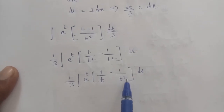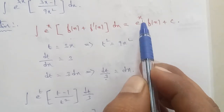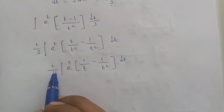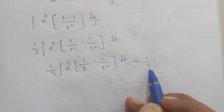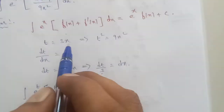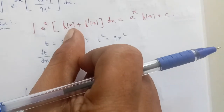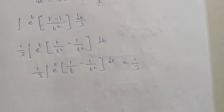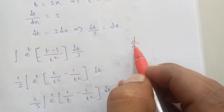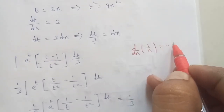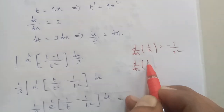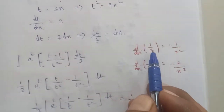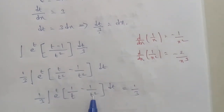Now comparing with the formula integral of e power x times [f of x plus f dash of x] dx, we can see that f of t equals 1 by t, and f dash of t equals minus 1 by t squared. Since differentiating 1 by t gives minus 1 by t squared, the formula matches. So the answer is e power t times f of t plus C.